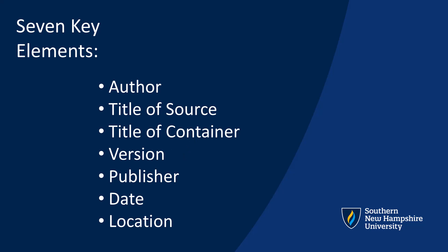When citing AI, the publisher will be the name of the company that made the tool, the date is the day on which the content was generated, and the location will be the general URL for the tool.